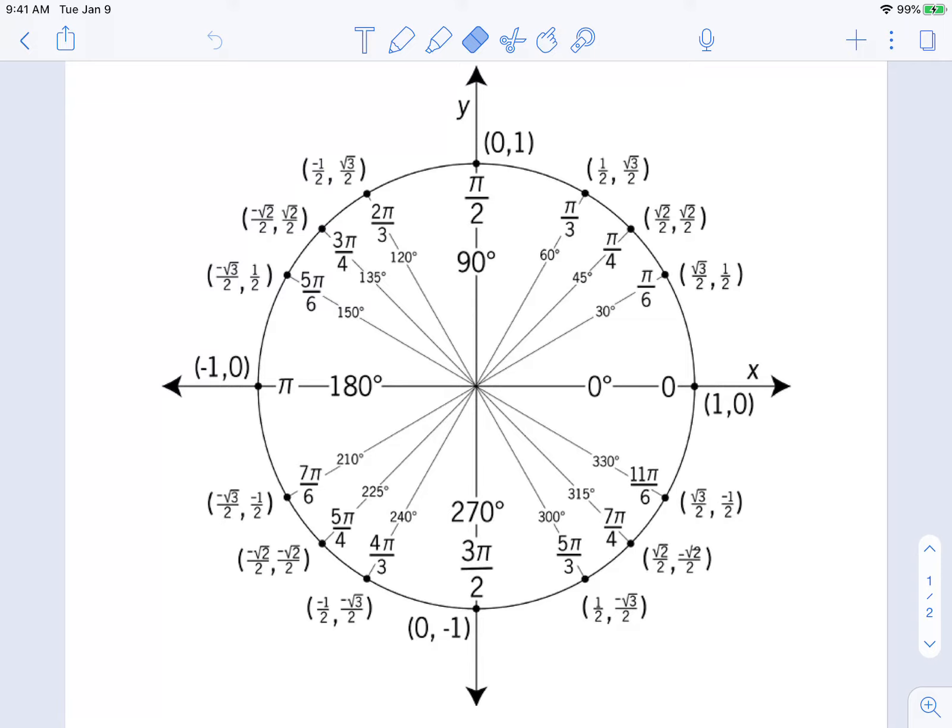Hopefully you tried to figure out at least one quadrant of values. Here is a completed unit circle that you can find on D2L. You are going to print this and live by this for a couple weeks until it really is cemented in your brain.